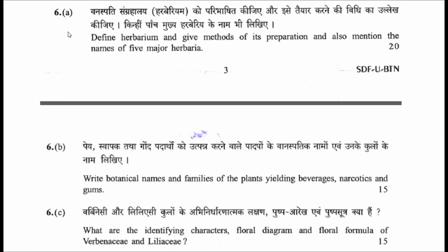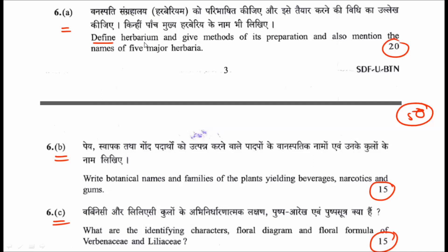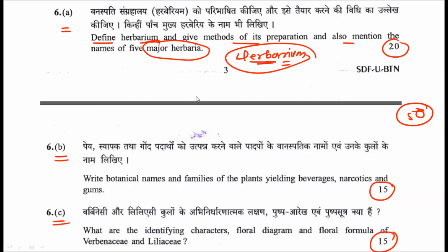Question six is divided into three sub-questions carrying 20, 15, and 15 marks. The first sub-question asks you to define a herbarium, give methods of its preparation, and mention the names of major herbaria. You have to describe how herbaria are created and also mention the five major herbaria — this earns 20 marks.